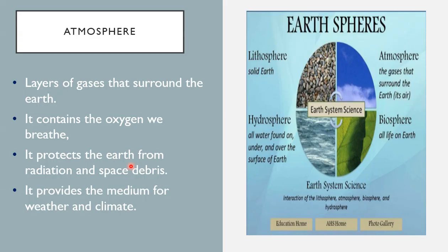Above the Earth itself, we have what are called the Earth's spheres — the Earth's systems that give the reason for life to begin on Earth. First is the atmosphere: the layers of gas surrounding the Earth that contain the oxygen we breathe. The atmosphere protects Earth from radiation and space debris — the rocks flying in space that might fall on Earth — and it provides the medium for weather, climate, seasons, and temperature.